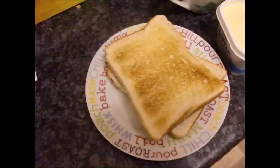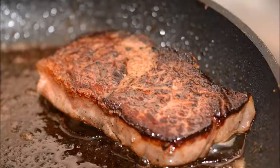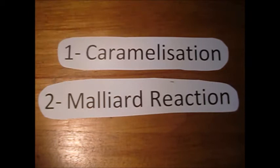Why does food go brown when it's cooked? Foods like chips, bread, toast, onions, and meat all go brown when we cook them due to two main reasons. The first of which is caramelization.